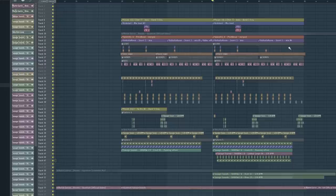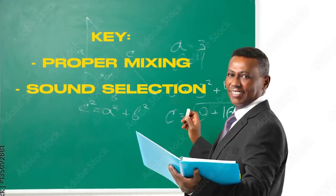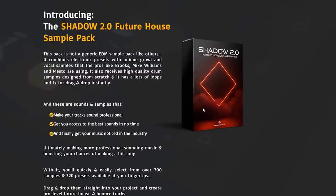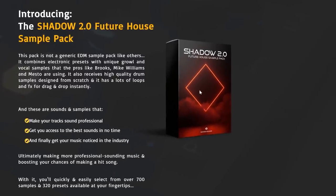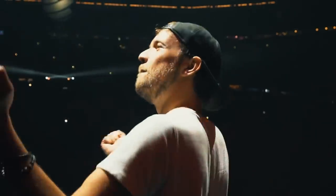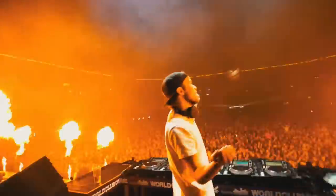And my friends, this is basically everything you need to create a Brooks style track. It may seem simple and it kind of is, but the big key in this is the proper mixing and sound selection. To get the best sounds for this genre you have to check out my future bounce sample pack called Shadow. This pack is all you need to create professional aggressive sounding drops like Brooks. If you want to start making music like this, you have to get it and start making tracks that'll punch people in the face.